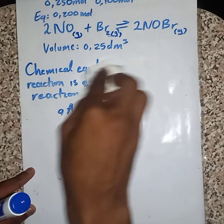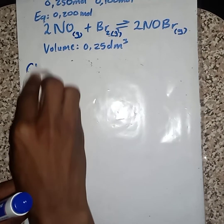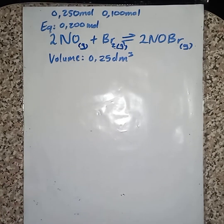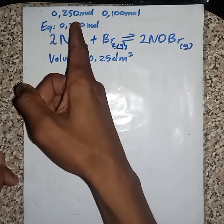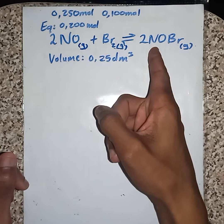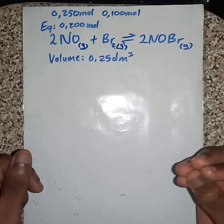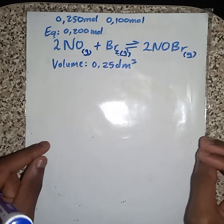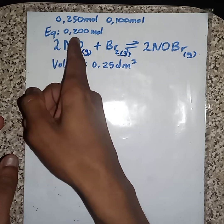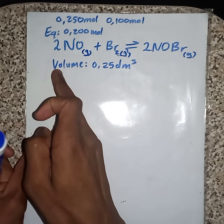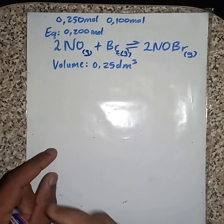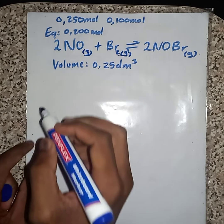The question wants us to calculate the chemical equilibrium KC value. They gave us the initial moles of NO as well as Br2. We know that initially the value of our product is going to be 0 if it is not given. They also gave us that the number of moles of NO at equilibrium is 0.200, and they also gave us the volume of the entire reaction container.